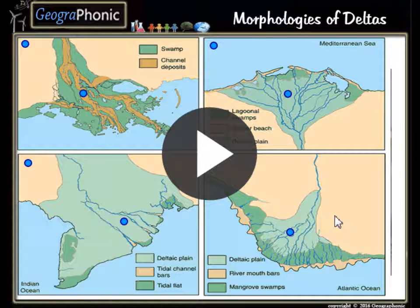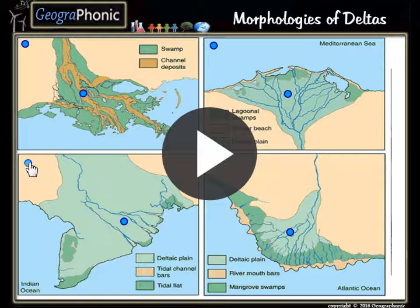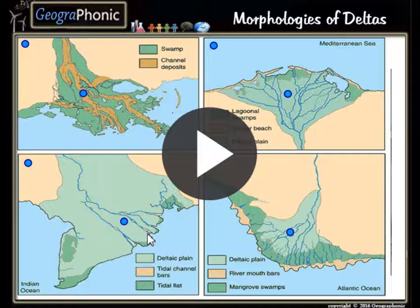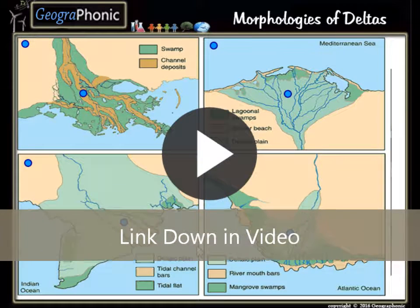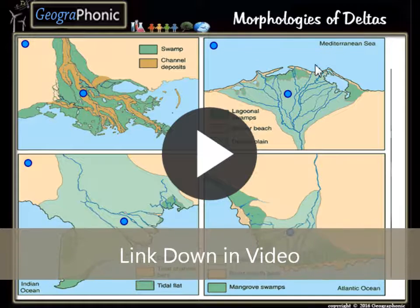This is an exercise for geography about morphologies of deltas. We see here four pictures. In those four pictures you have to guess the four different types of deltas you see here, and also the four different locations which are connected to that certain type of delta. It's a game and you can play it yourself. Look in the description of this video to find a link to the game.